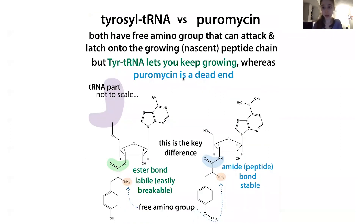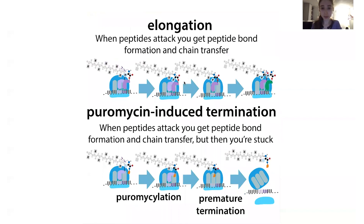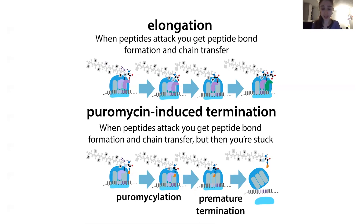Looking at the structures of the tRNA and puromycin, both have a free amino group that attacks the carbonyl carbon on the growing chain. In the tRNA case, an ester bond forms that can keep being broken and reformed to allow elongation. But with puromycin, an amide bond forms that cannot be attacked by the next incoming tRNA, and so this is why puromycin terminates translation while the tRNA keeps elongating.